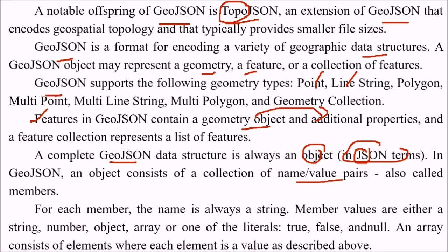For each member, the name is always a string, and member values can be a string, number, object, array, or any literal value such as true, false, or null. An array consists of elements where each element is a value.